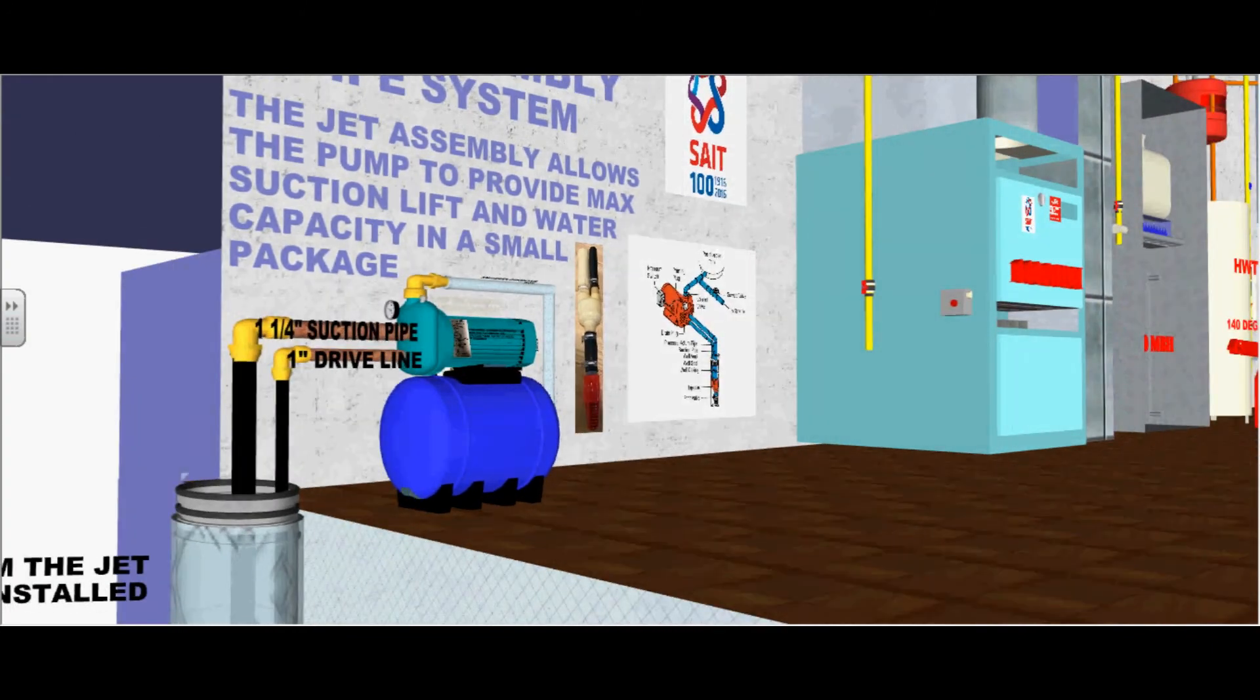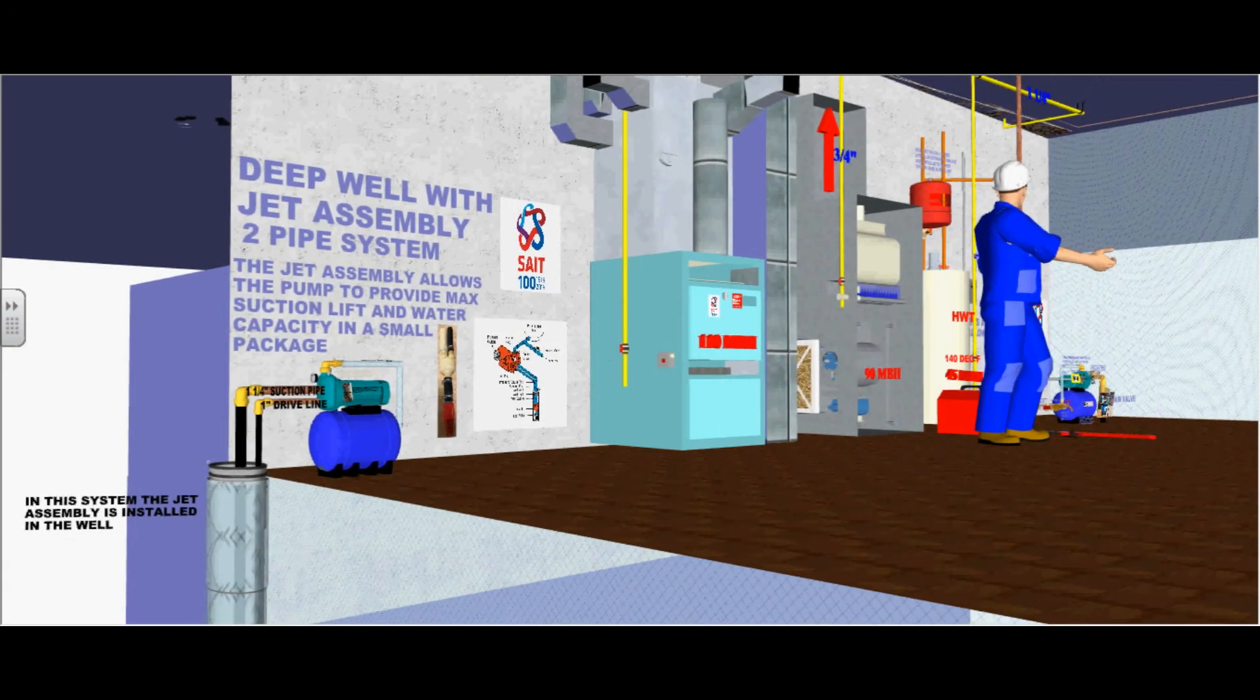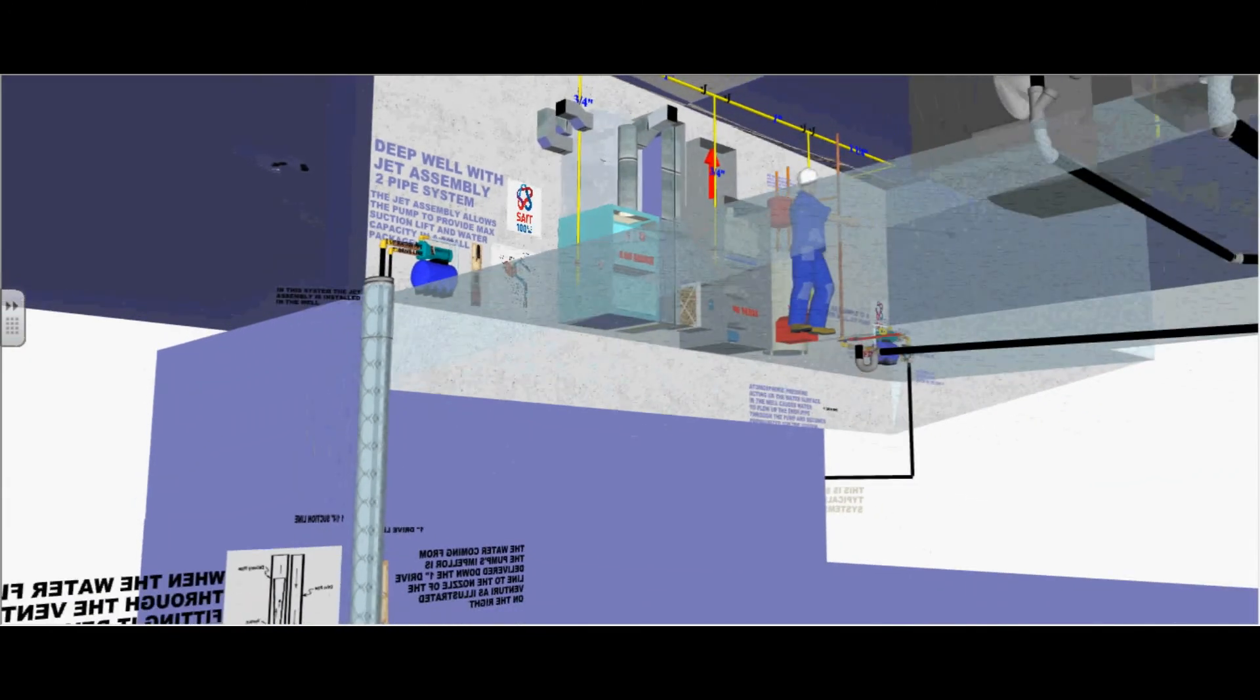Here is the inch and a quarter suction line and one inch drive line. In this system, the jet assembly is installed in the well.